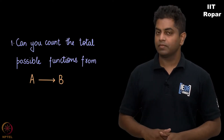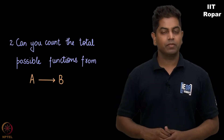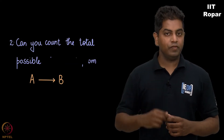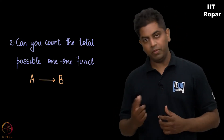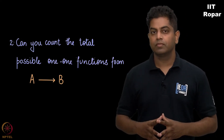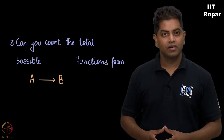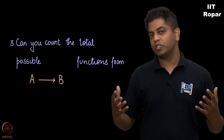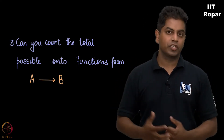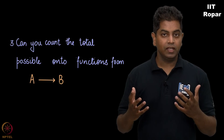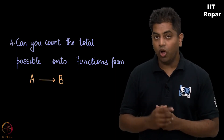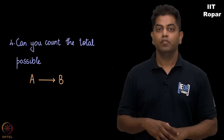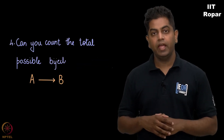First question, second question: can you count all possible one-to-one functions from A to B? And the natural next question: can you count all possible onto functions from A to B? And finally, can you count all possible bijections from A to B?